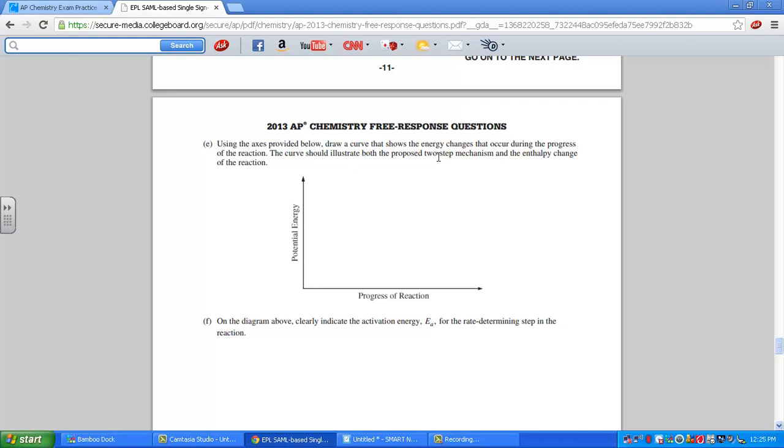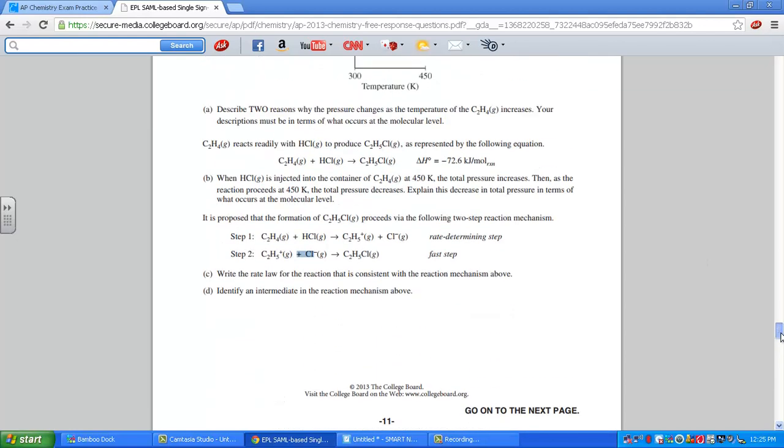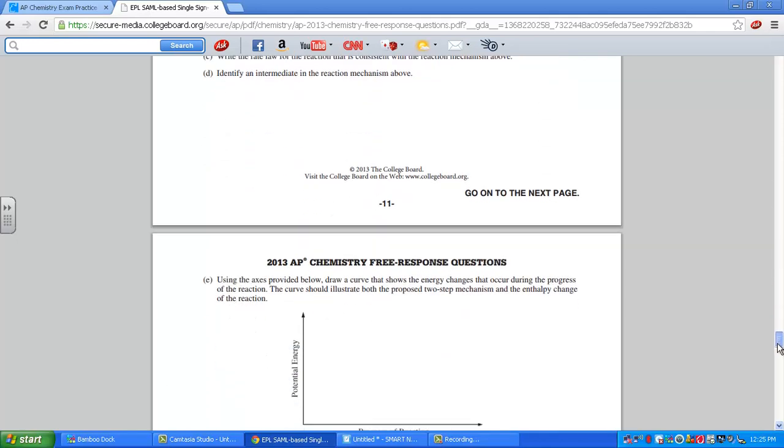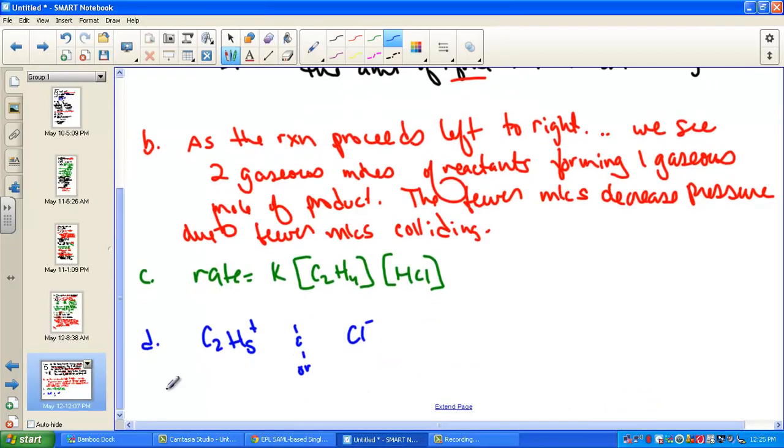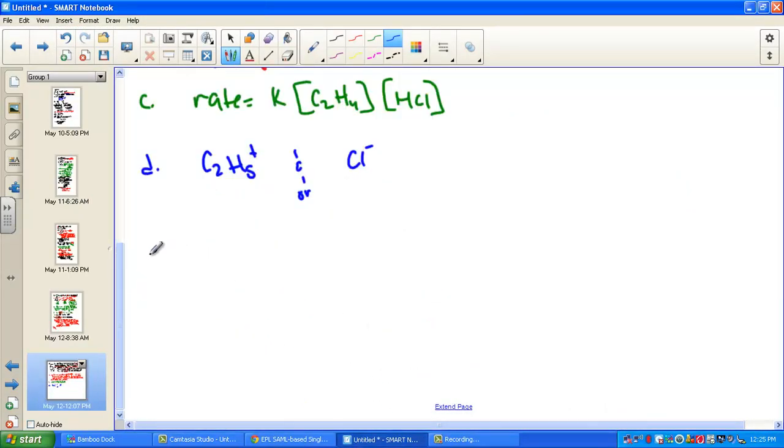And just illustrate that two-step enthalpy change. So keep in mind if the first one were indeed the rate determining step, we need to show two steps on our progression curve. The first one should have the higher activation energy since it is indeed determining the rate law.